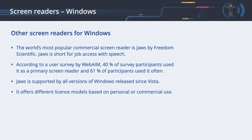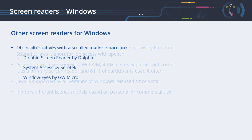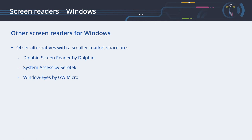Other screen readers for Windows. As previously discussed, there are commercial screen readers for the Windows platform. The world's most popular commercial screen reader is JAWS by Freedom Scientific. JAWS is short for Job Access with Speech. According to a user survey by WebAim, 40% of survey participants used it as a primary screen reader and 61% of participants used it often. JAWS is supported by all versions of Windows released since Vista. Other alternatives with a smaller market share are Dolphin screen reader by Dolphin, System Access by Cerotec, and Window Eyes by GW Micro. You can find the links for more information about these screen readers below the video.